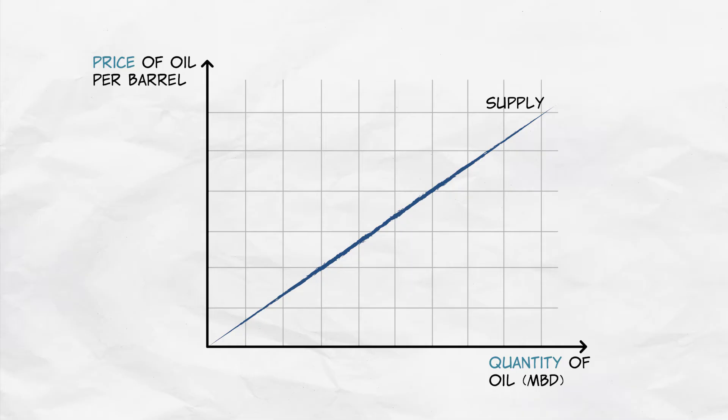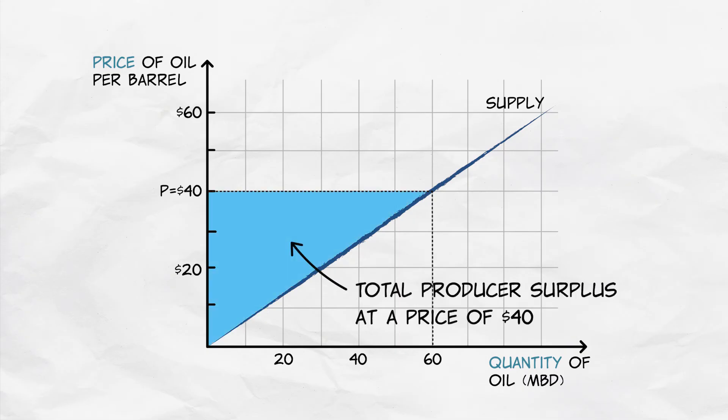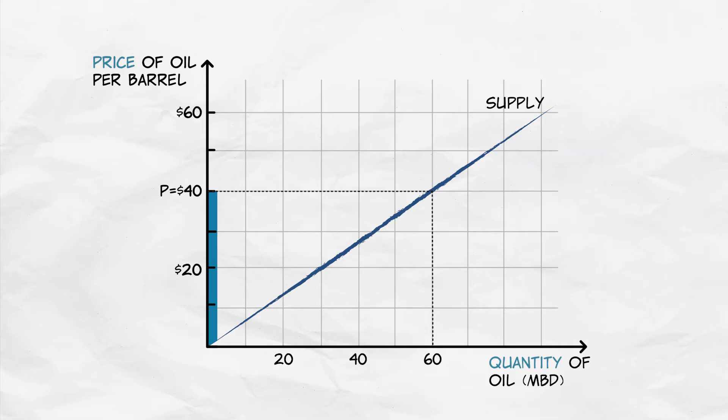Suppose that the price of a barrel of oil is $40 and the producer surplus at that price is this blue area. We can think of this as the producer surplus at the lowest cost to suppliers, plus the producer surplus at the second lowest, plus the producer surplus at the third lowest, the fourth lowest, and so forth.